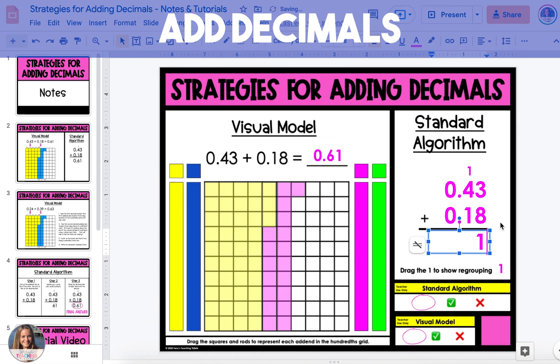Now add like you would with whole numbers, making sure to regroup if necessary, and bring the decimal points straight down into the answer. The sum is 61 hundredths, which matches the same answer that we got with the visual model.